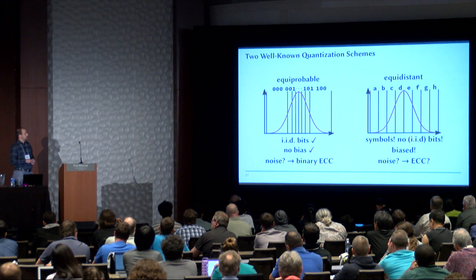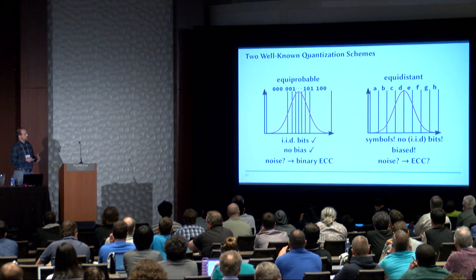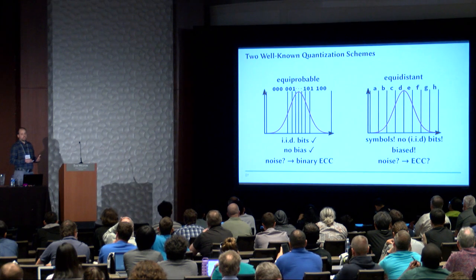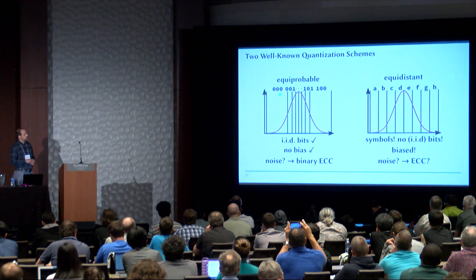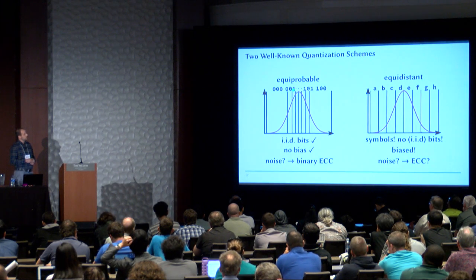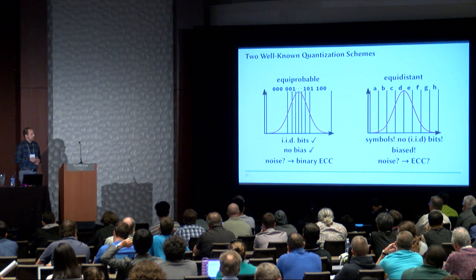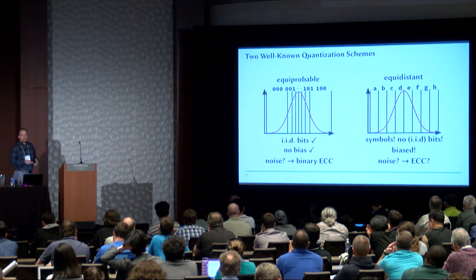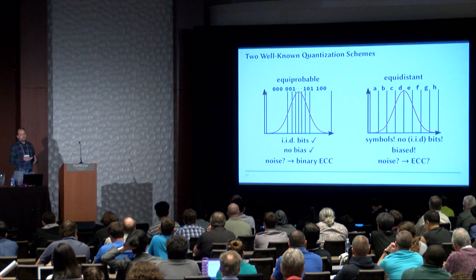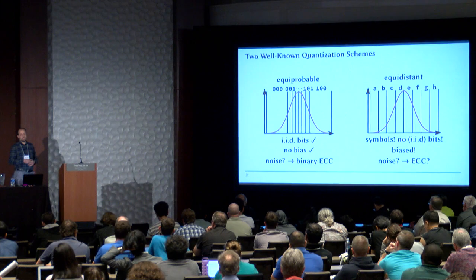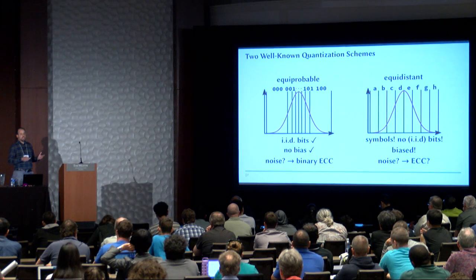There are two well-known quantization examples: equiprobable and equidistant. For equiprobable quantization, you do a kind of histogram equalization so each interval occurs with equal probability. The authors of the coating PUF assigned a gray code to neighboring intervals such that the bit difference between neighboring intervals is always just one bit. If you apply the equiprobable quantization, the results are also IID bits with no bias. For the remaining noise, you can then use a binary ECC. This maps the problem back to the binary scenario.